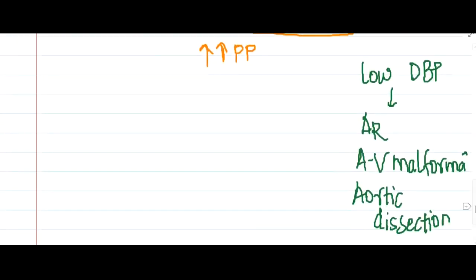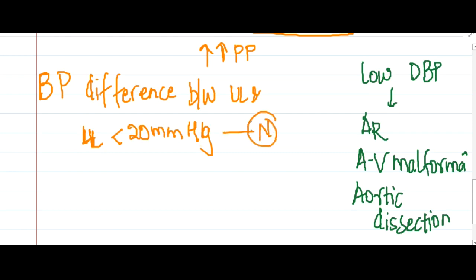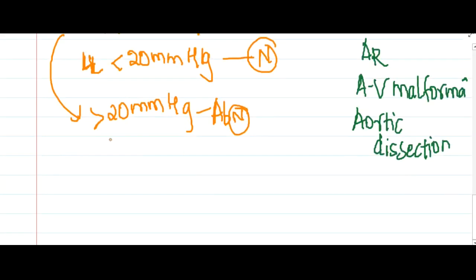There is a difference in blood pressure between the upper limb and lower limb. Normally this difference is less than 12 mmHg. If the difference is more than 20 mmHg, it is abnormal and is called Hill's sign, which is seen in aortic regurgitation.